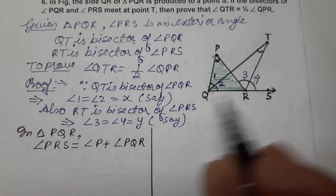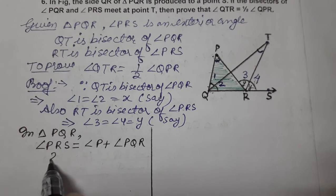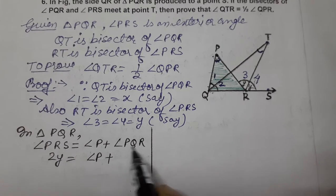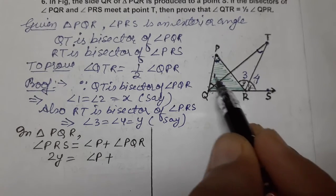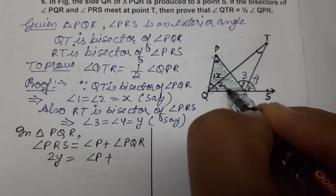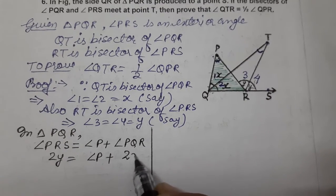Both are equal, so this is y and this is y, means 2y. Angle P is single, and angle PQR is 1 and 2, and 1 and 2 is x, so this is x and this is x, so 2x.